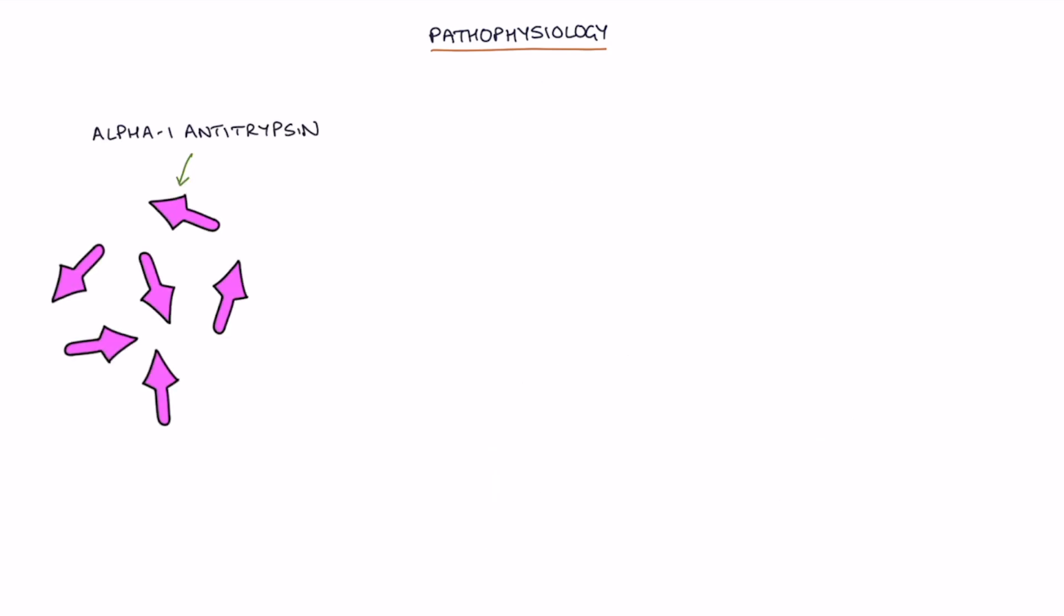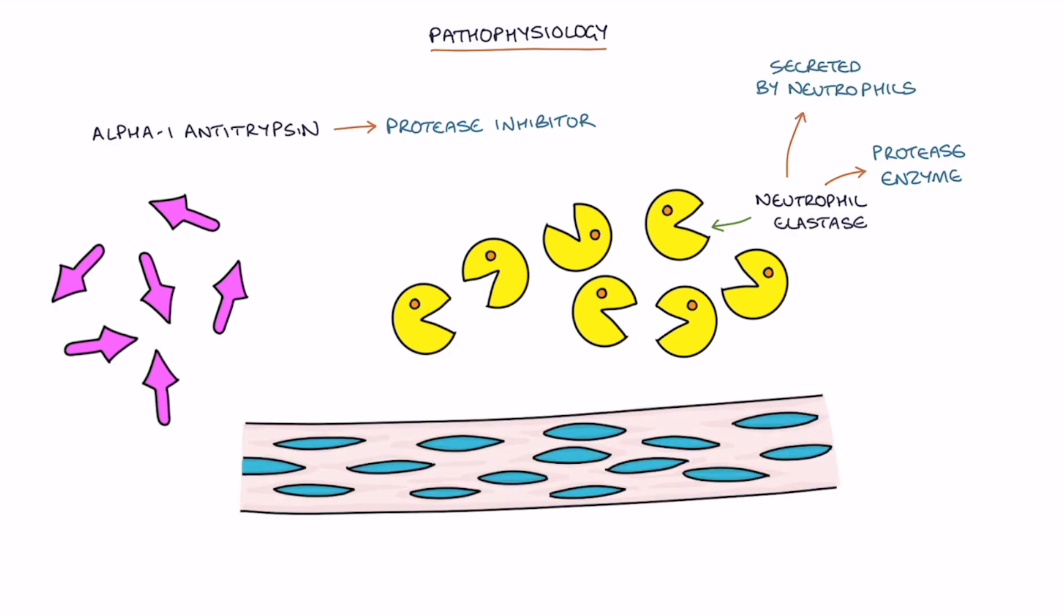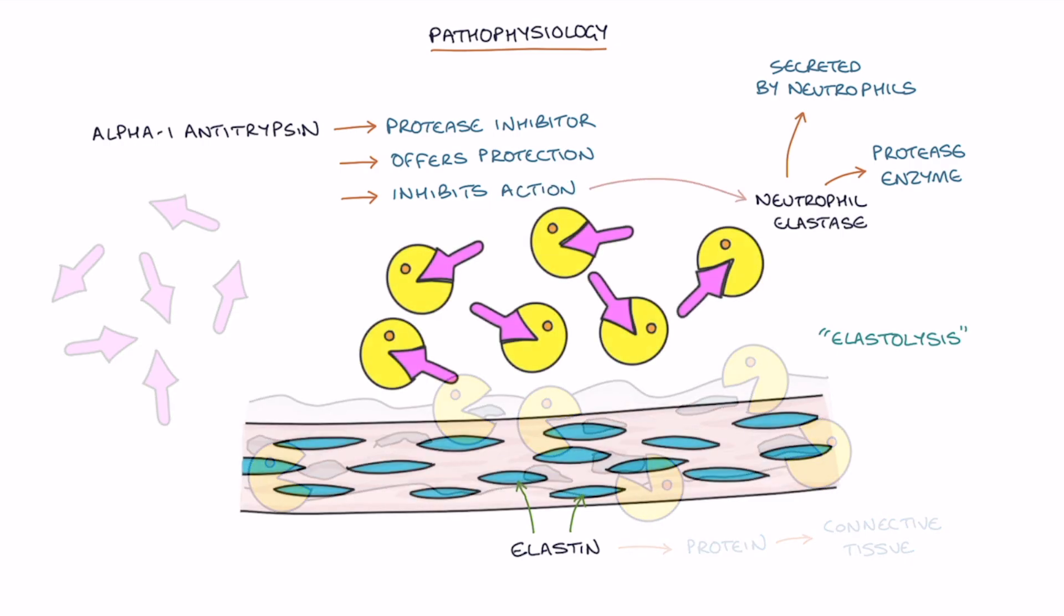Alpha-1 antitrypsin is a protease inhibitor. One critical protease enzyme is neutrophil elastase. This enzyme, which is secreted by neutrophils, digests elastin in a process called elastolysis. Elastin is a protein found in connective tissue that helps keep the tissues flexible. Alpha-1 antitrypsin offers protection to the connective tissues by inhibiting the action of the neutrophil elastase enzyme.